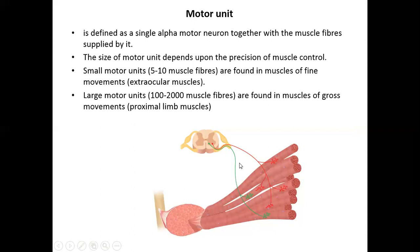Small motor units are found where fine, precise movement is needed, such as in the extra-ocular muscles or the distal hand muscles. Large motor units are found where greater force is needed but precision is less critical, such as in the proximal limb muscles of the shoulder region. In the hand, a single alpha motor neuron supplies only a few muscle fibers, enabling precise movements.